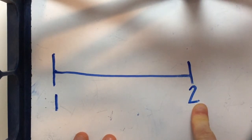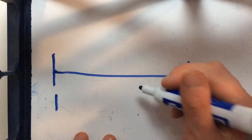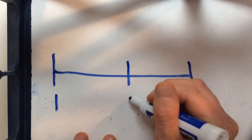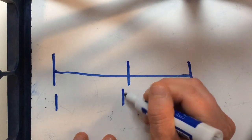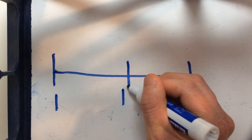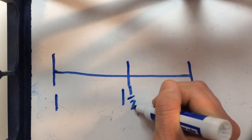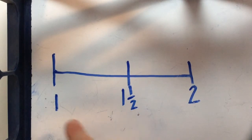So our number line starts at 1. For this lesson it's going to end at 2 and then our midway point or our midway benchmark is going to be 1 and 1 half. Again not just 1 half but it's 1 plus another half.